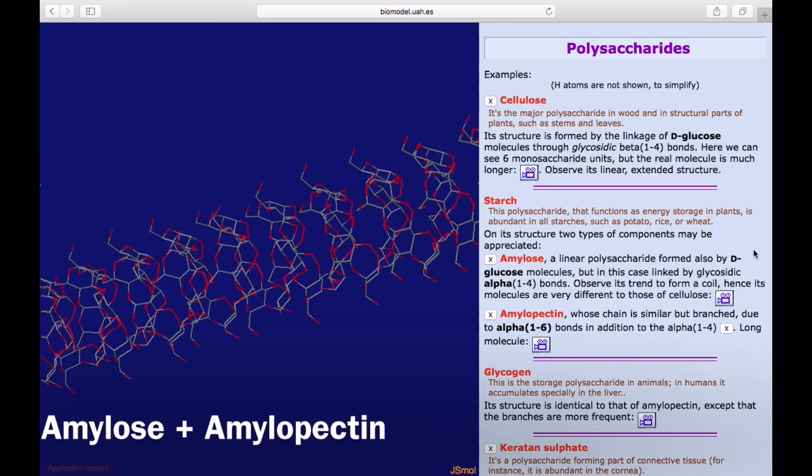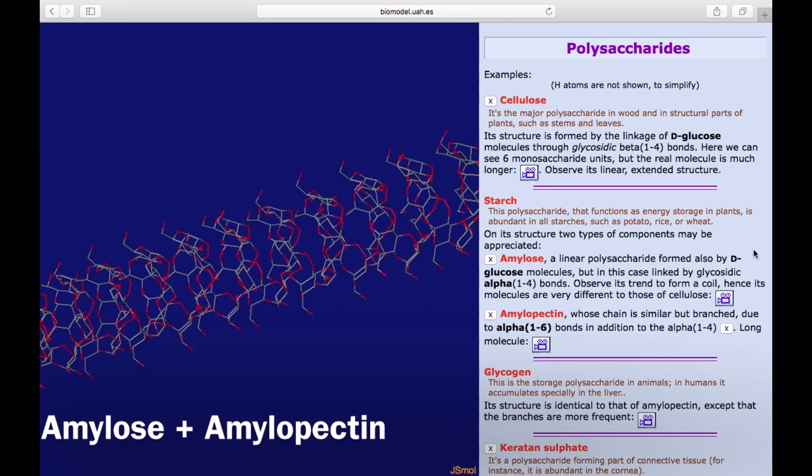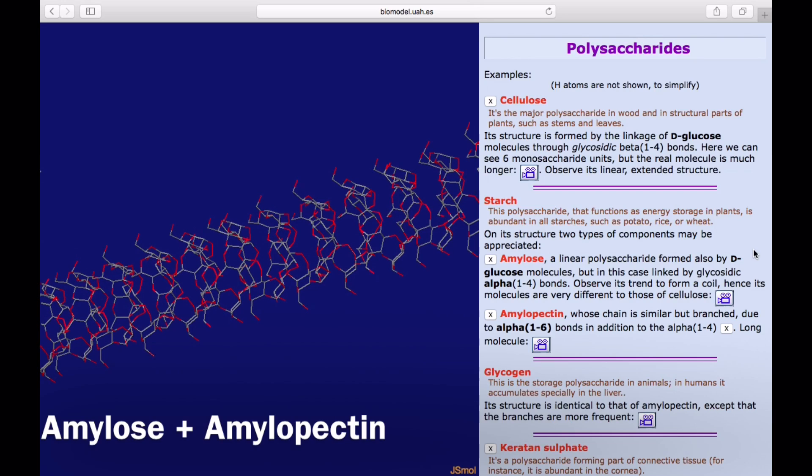Moving on to look at starch, we should first know that starch is made up of two other polysaccharides. It's made of amylose and amylopectin.